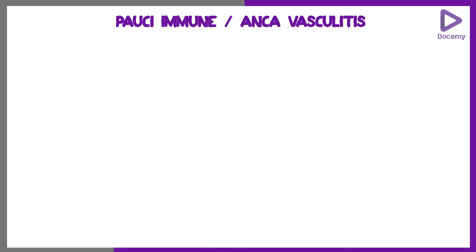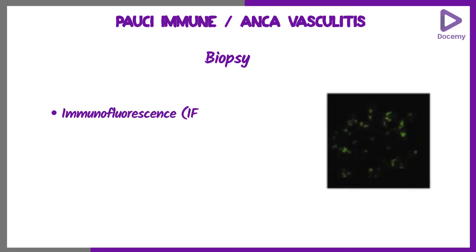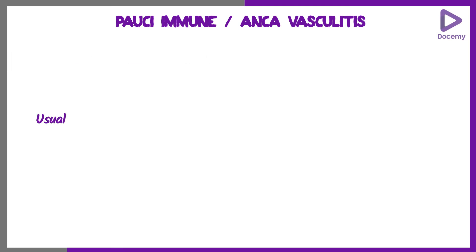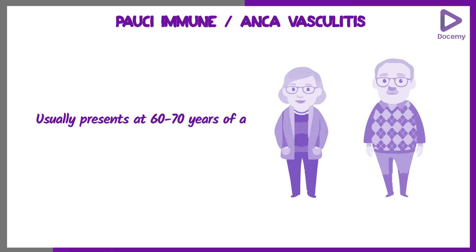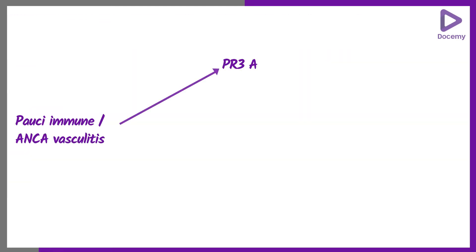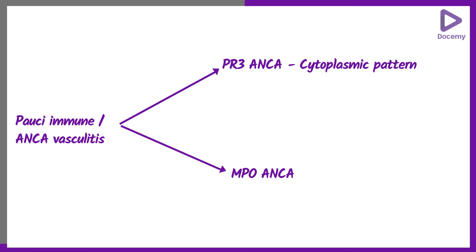Coming to pauci-immune ANCA vasculitis, immune complexes are not present in the biopsy. Biopsy shows immunofluorescence nil, and ANCA will be positive. It usually presents at a later age, 60 to 70 years. There are two types: PR3-ANCA and MPO-ANCA. PR3-ANCA usually shows a cytoplasmic pattern (C-ANCA), and MPO-ANCA usually shows a perinuclear pattern (P-ANCA).